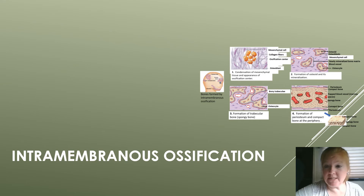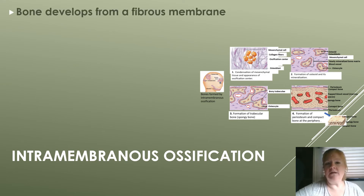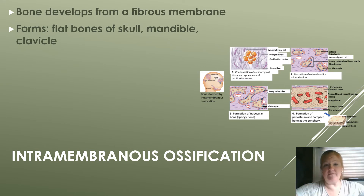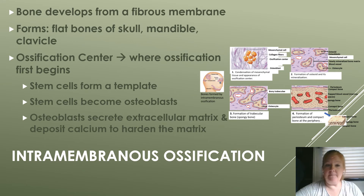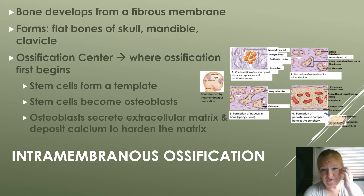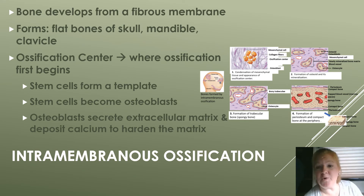There are two types of ossification. Intramembranous ossification is where bone develops from a fibrous membrane. It forms the flat bones of the skull, the mandible, and the clavicle. The ossification center is where ossification first begins — stem cells form a template of fibrous tissue, then become osteoblasts, which secrete the extracellular matrix and deposit calcium to harden it. So first it's a fibrous template, then it becomes bone.